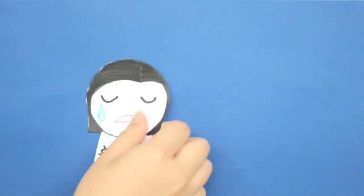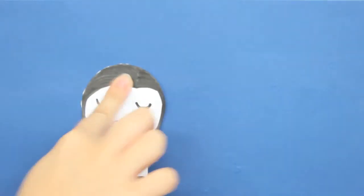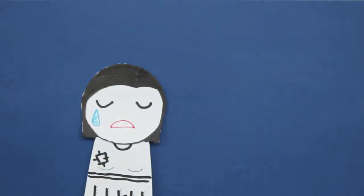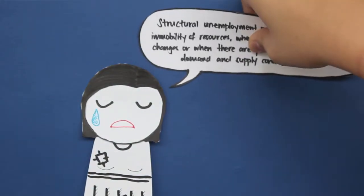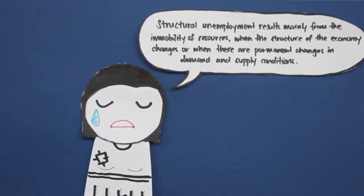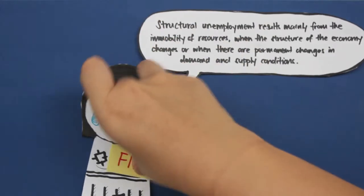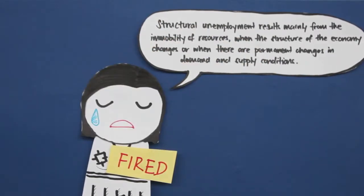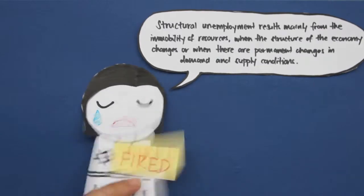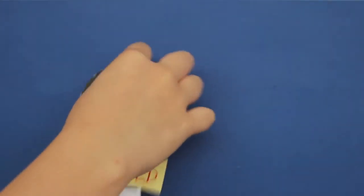What about Lisa? Lisa got fired due to a form of structural unemployment, which is mainly due to the immobility of resources when the structure of the economy changes, or when there are permanent changes in demand and supply conditions. Lisa used to work in a floppy disk factory. What's a floppy disk? Exactly my point! Because there is now a drop in demand for floppy disks, Lisa is now unemployed.